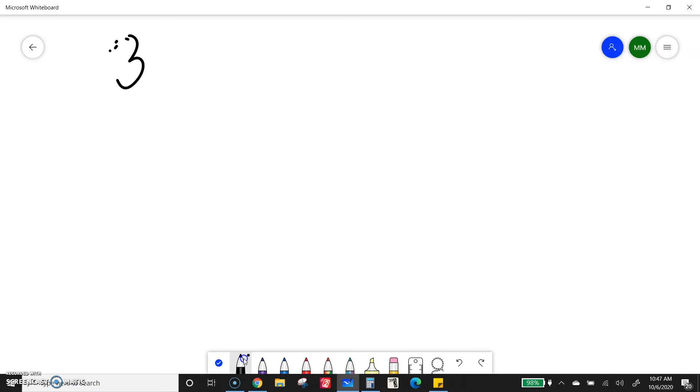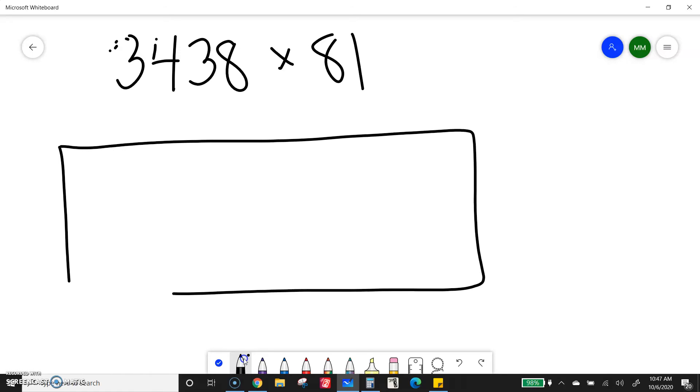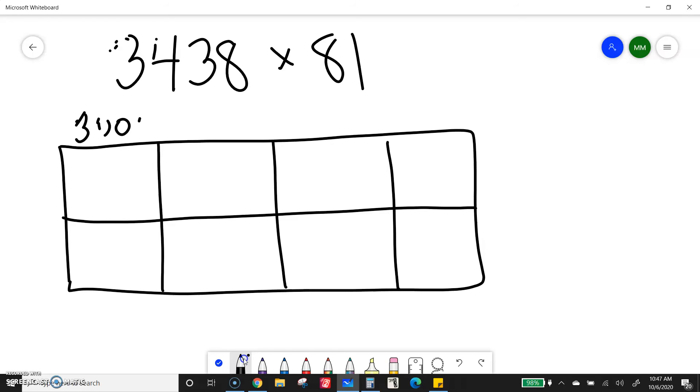So this next one is 3,438 times 81. So again, bigger box because I have more numbers, 4 digits by 2 digits, 3,438 times 81.